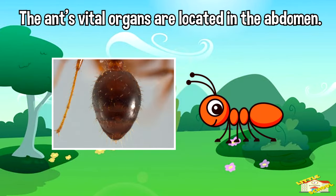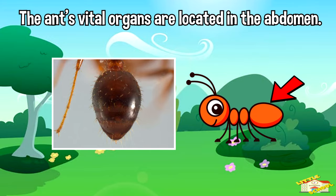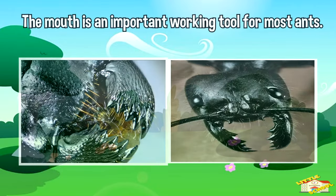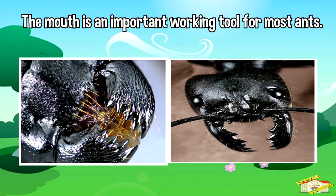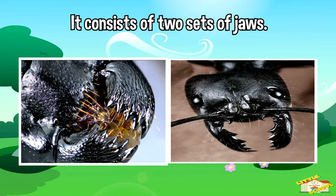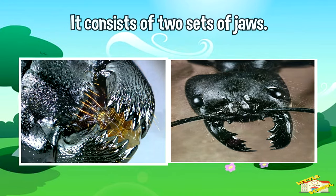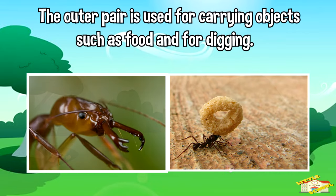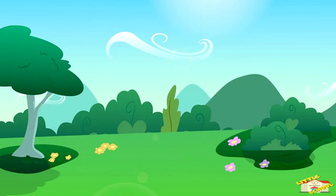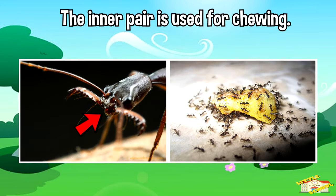The ant's vital organs are located in the abdomen. The mouth is an important working tool for most ants — it consists of two sets of jaws. The outer pair is used for carrying objects such as food and for digging. The inner pair is used for chewing.